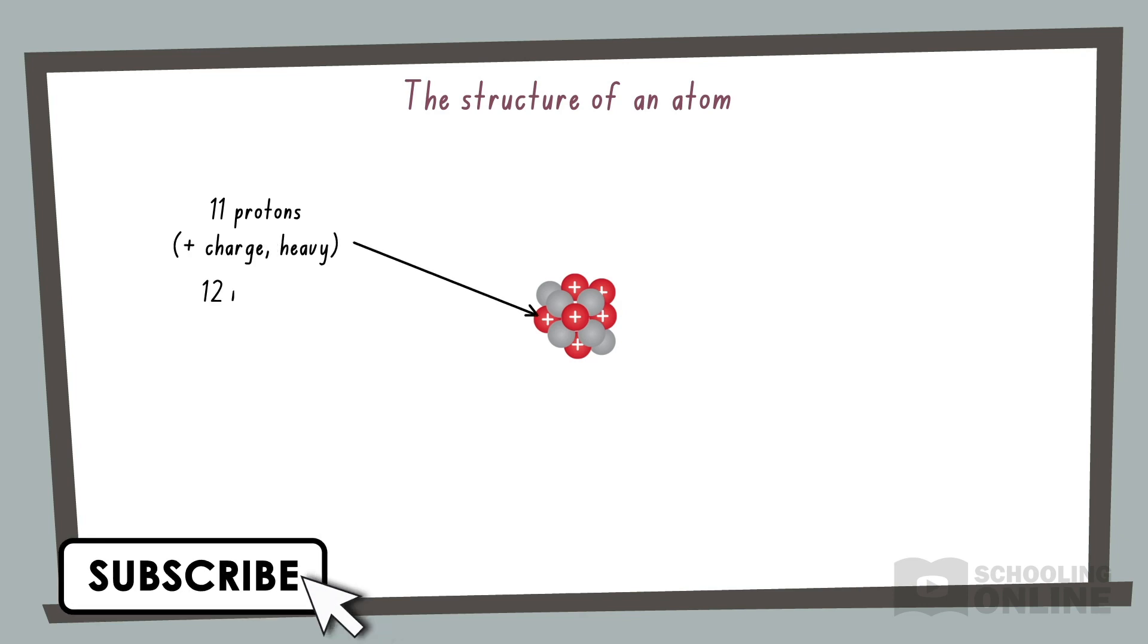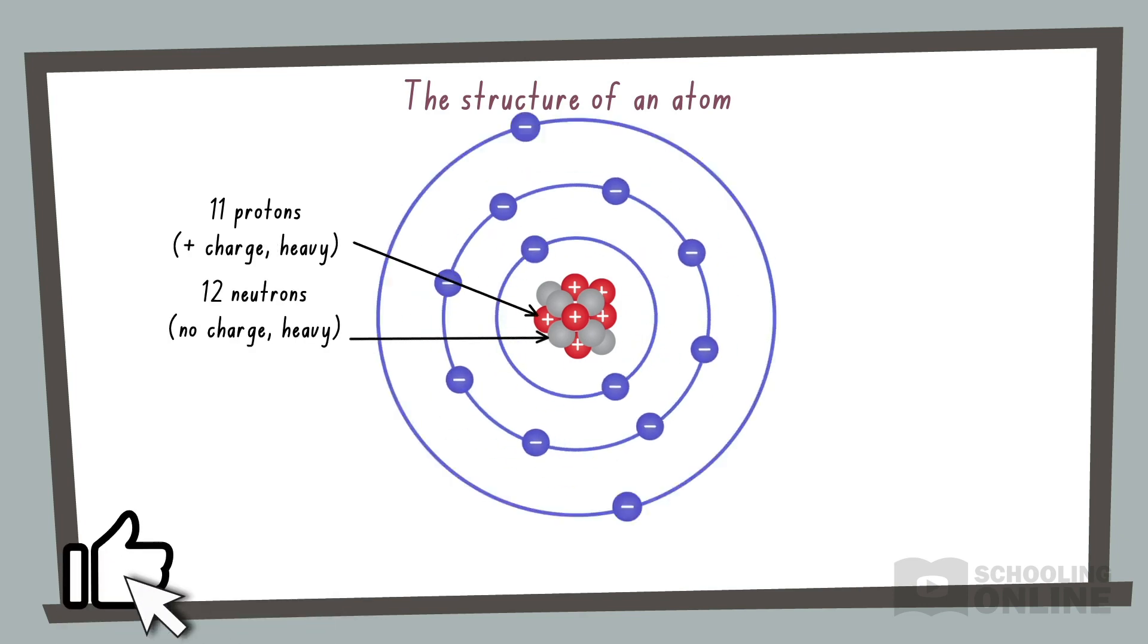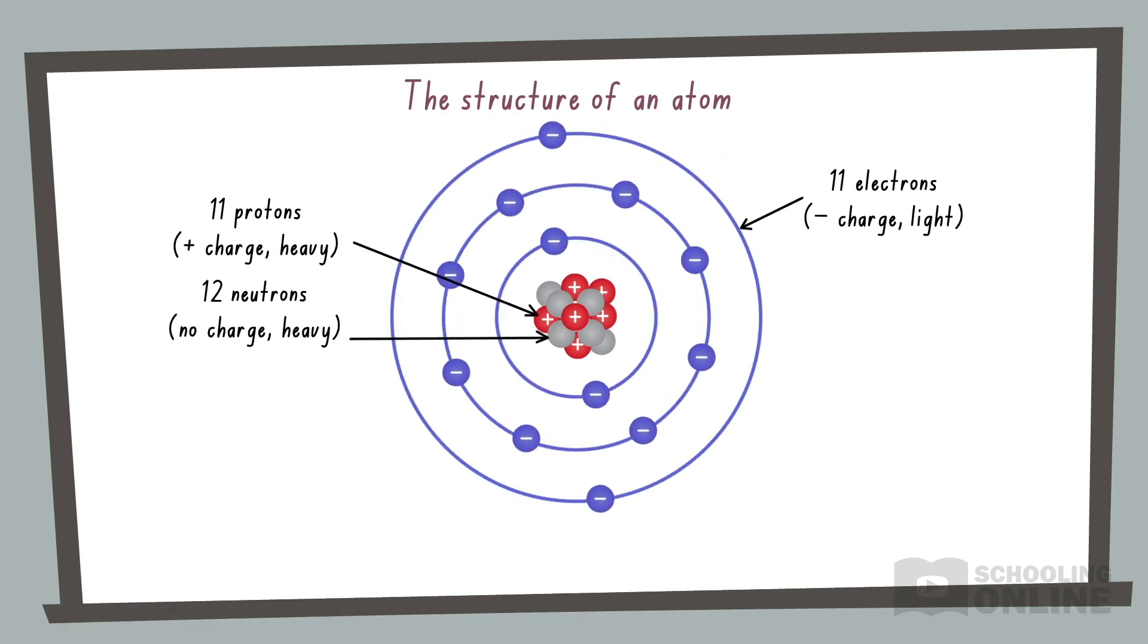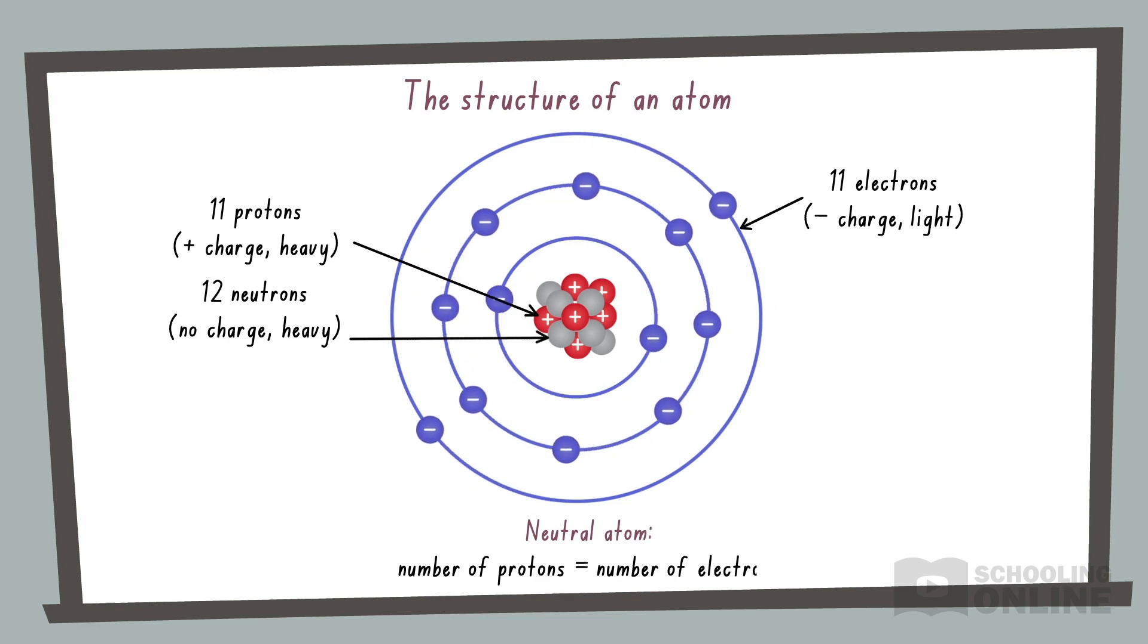Before starting this lesson, let's quickly revise the structure of the atom from Year 10 Science. The centre of an atom contains a positively charged nucleus, which is made from protons and neutrons. Meanwhile, electrons orbit the nucleus in shells. The maximum number of electrons that fit in each shell increases as you go further away from the nucleus. A neutral atom has no net charge, which means the number of protons equals the number of electrons.